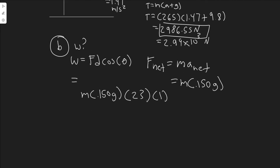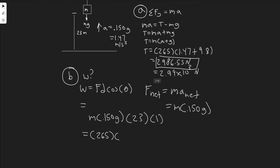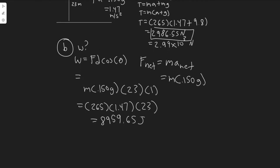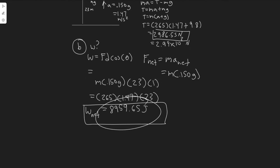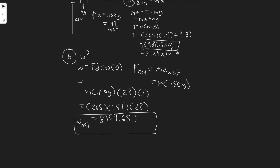So the net work equals mass times 0.150 g times the distance. The mass is 265 kg, 0.150 g equals 1.47 m/s², and the distance is 23 meters. Calculating: 265 times 1.47 times 23 gives 8,959.65 joules. So the net work W_net equals 8,959.65 joules. Let's move on to C.